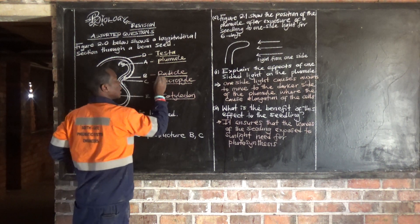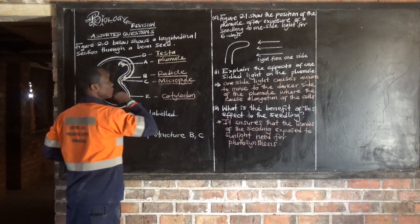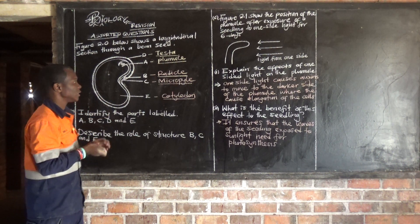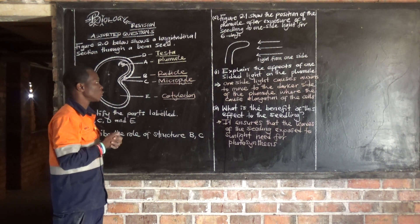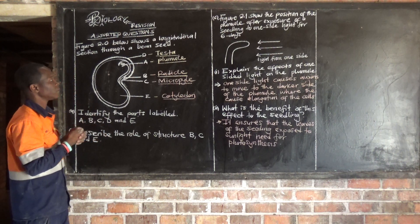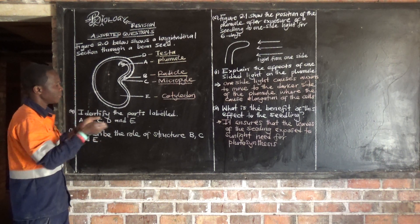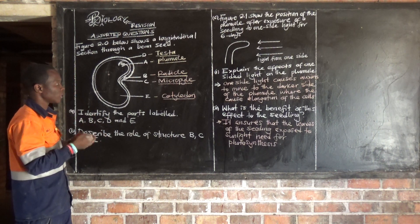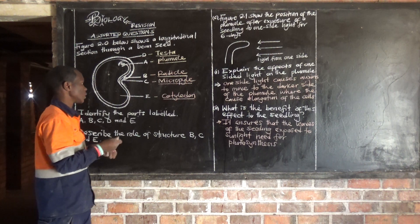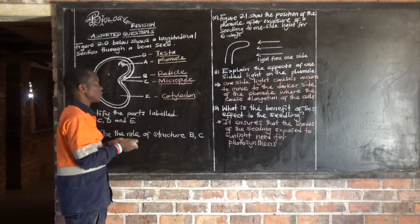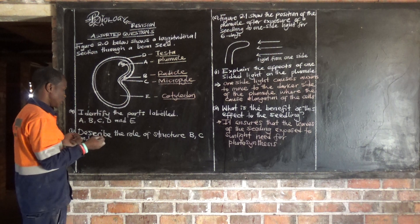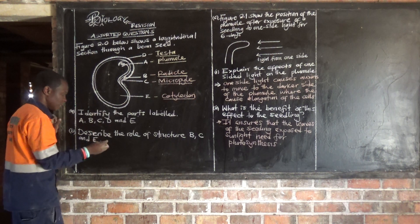B is the radicle. The radicle develops into the root system after germination. Germination is simply the developing of a seed into a seedling.